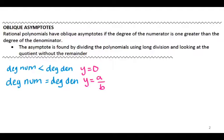The third scenario was when the degree of the numerator was greater than the degree of the denominator. Then you don't actually have a horizontal asymptote. What you have instead is called an oblique or a slant asymptote. The asymptote is found by dividing the polynomials using long division or synthetic division, depending on what you're dividing by, and looking at the quotient without the remainder. So let's go ahead and do an example.